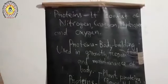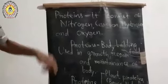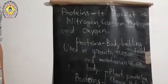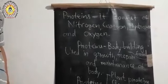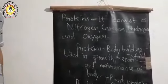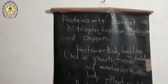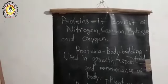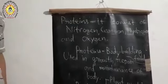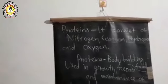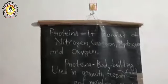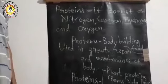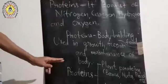Now let us discuss another type of nutrient: protein. Proteins consist of nitrogen, carbon, hydrogen, and oxygen. Proteins are also known as body-building food because they are used in the proper growth, repair, and maintenance of the body.